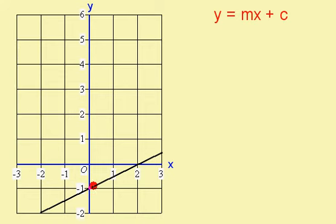So if I start here and go 1 to the right, I only need to go up a half, so my gradient is a half. The line crosses the y axis at the number minus 1, so it's a half x minus 1.